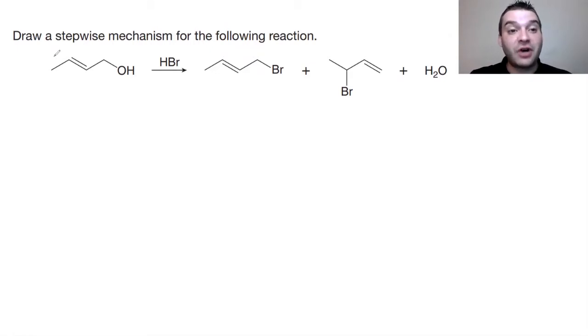Here we have draw a stepwise mechanism for the following reaction. I have an alcohol reacting with hydrobromic acid to generate two separate new compounds, both containing a bromine. Now the special case that we have going on right here is our alcohol also contains a double bond. This is an allylic alcohol and we'll see how this is going to come into play in our mechanism in one second.